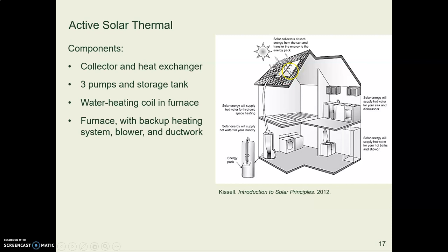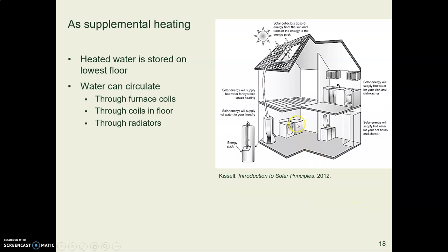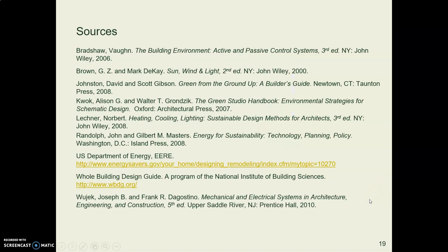Here's a diagram. Up on the roof are the flat plate collectors — black material on the bottom. The water goes down and is stored in a tank on the lowest floor, and then that water can be pumped through the house, especially in coils through the floor. It could also be pumped through radiators — like old steam radiators, but now heated by the sun. And finally, here are some sources and websites where you can go look at how to do these solar systems.